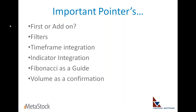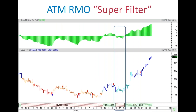The important pointers I've given you today: make sure you use the first breakout, not the add-on breakouts. Use filters — buy above the high. Make sure you don't unnecessarily look at too many timeframes — have one root timeframe. Remember, the RMO is already looking at the short-term, medium-term, and long-term elements. You can do further indicator integration if needed. If you like using Fibonacci, no harm for support and resistance. But volume as a confirmation is a definite yes — because without volume, you're not going to drive into a big trend. Keep these important pointers when you use the inbuilt RMO system.